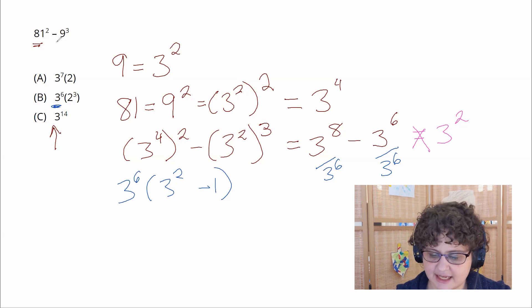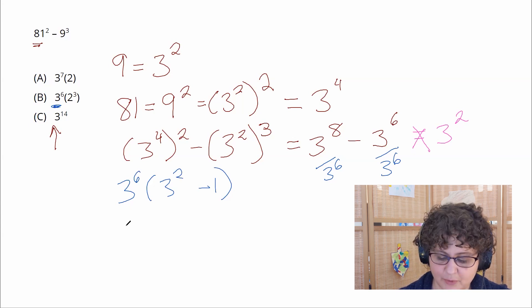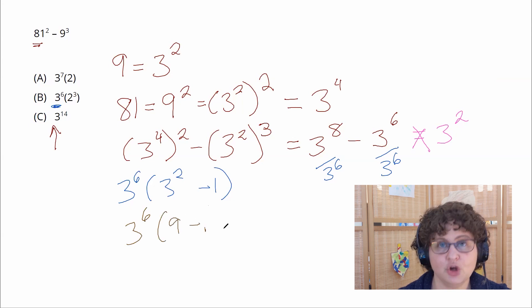That said let's keep moving forward with this. Now I'm not going to multiply out 3 to the sixth that's too large a number but instead I can multiply out 3 squared and put this as 9 minus 1 which of course then simplifies out to 3 to the sixth times 8.